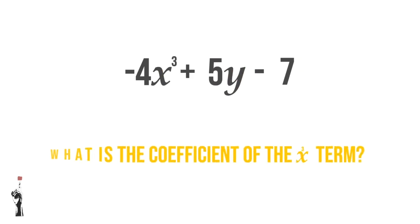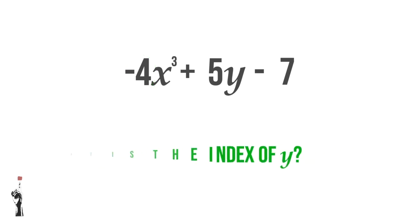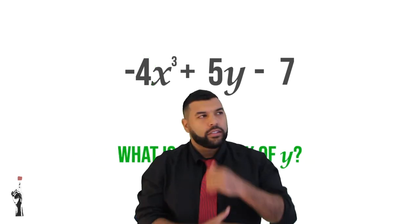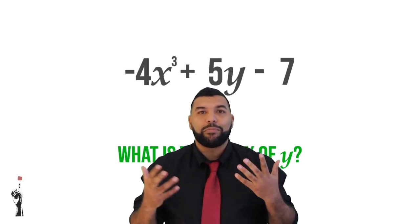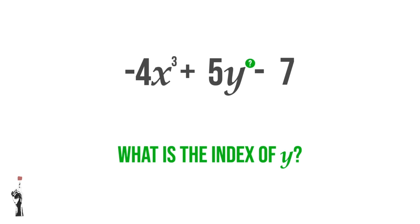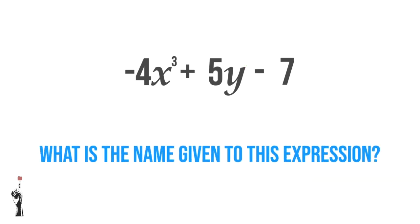What is the coefficient of the X cubed term? We know the coefficient is negative 4. What is the index of Y? The index is the power — there's no number above it, which means the power must be 1. Finally, what is the name given to this expression? We know that there are three terms, which makes this a trinomial.